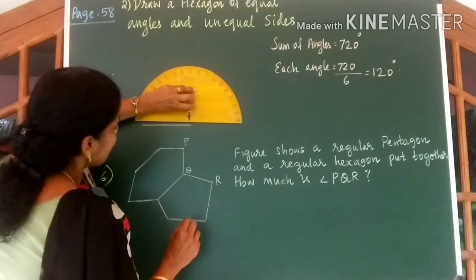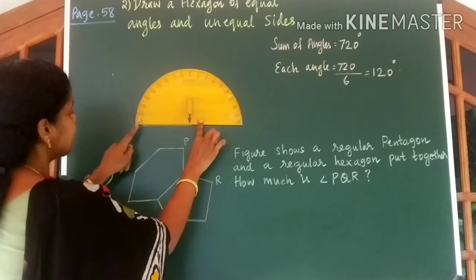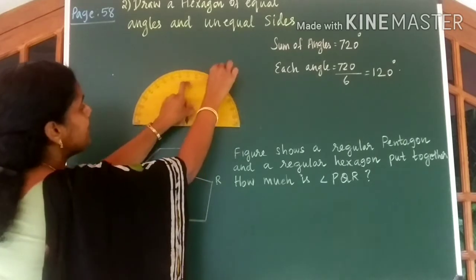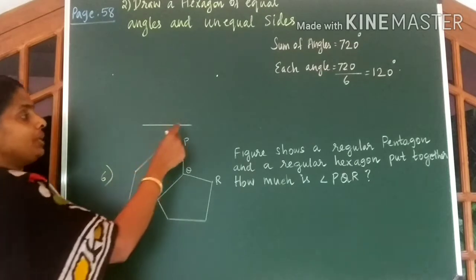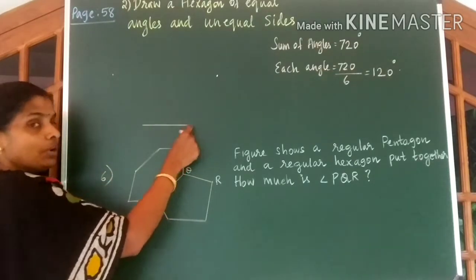Similarly, keep your protractor at this end. Measure 120 degrees. 120 degrees is here. Now draw lines from these two ends.